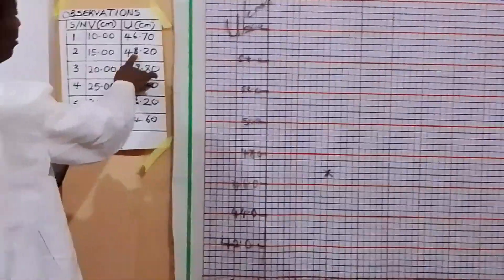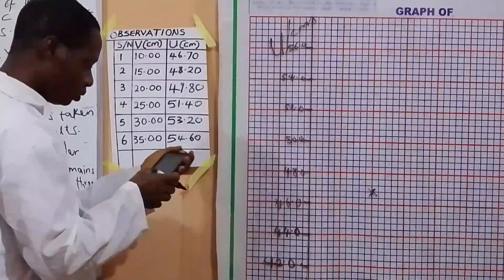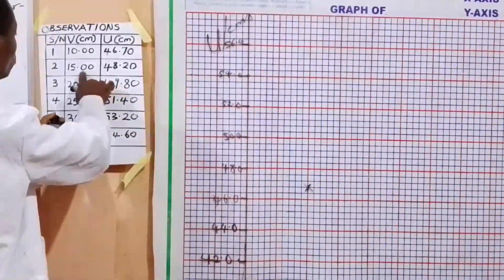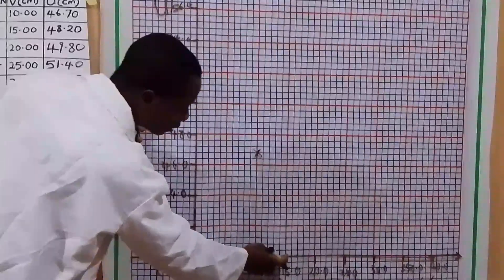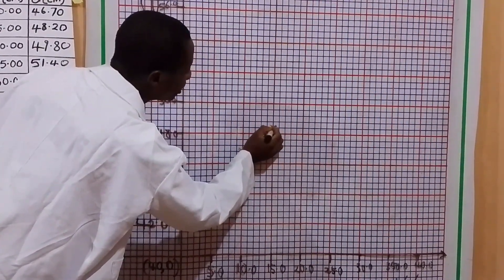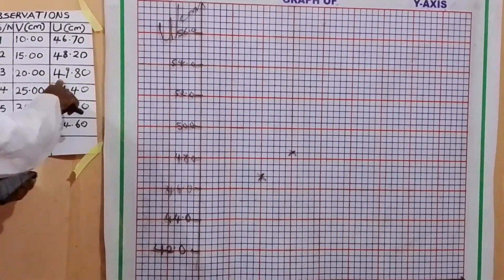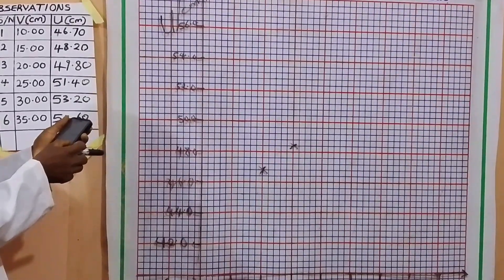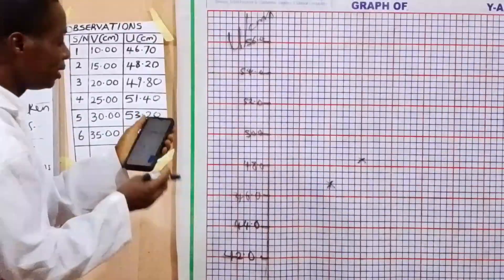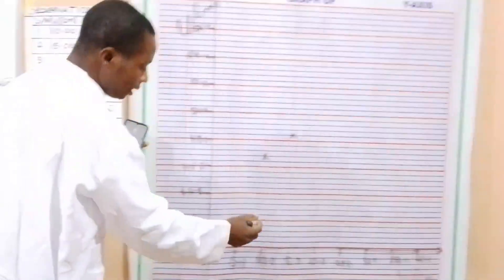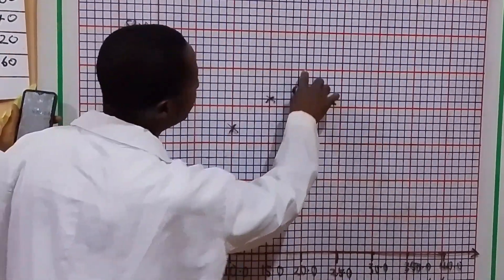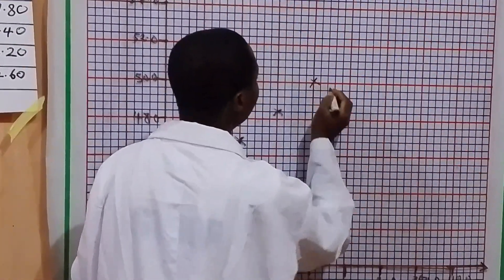Do the same for the second reading. 48 minus 40 is 8.0. Wait — the value is 8.2, so 8.2 divided by 0.4 is 21. At V = 0.15 we go to 21 boxes. Next value is 9.80, so 9.80 divided by 0.4 is 25. Go to where we have 20 and count 25 smaller boxes — that gives us the third point.